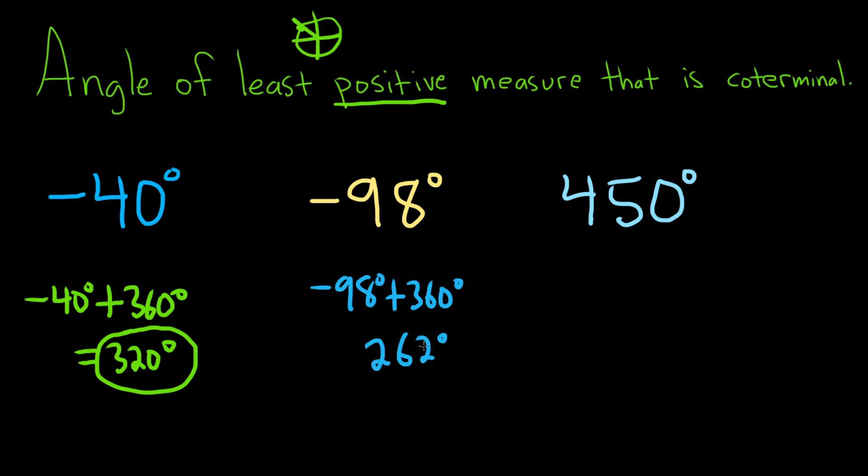That's a positive angle. And if we were to add 360 again, it would be bigger. So this is the smallest angle that is coterminal with negative 98.